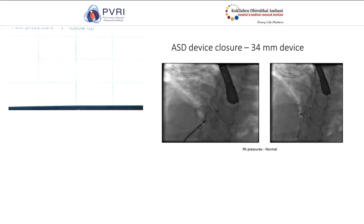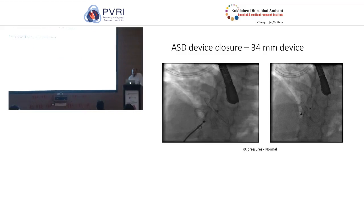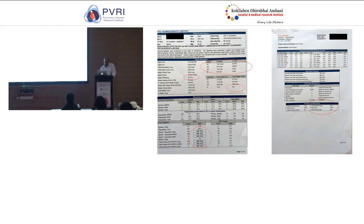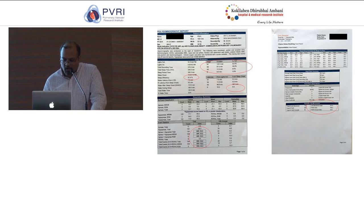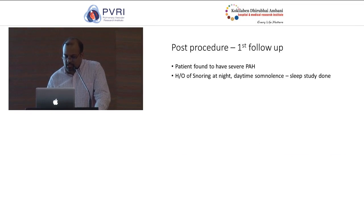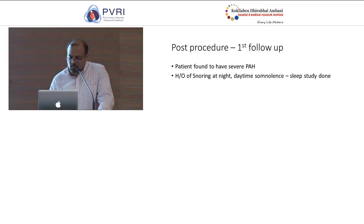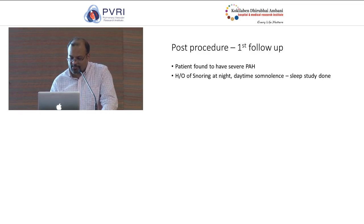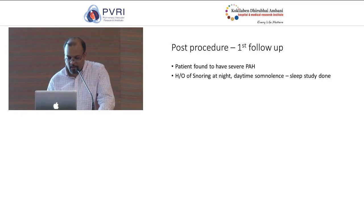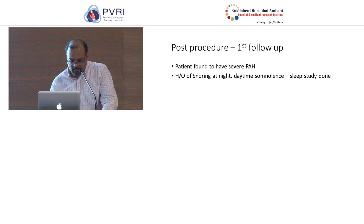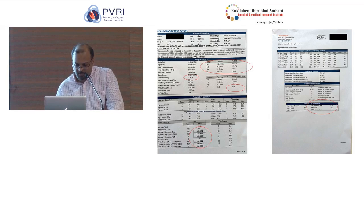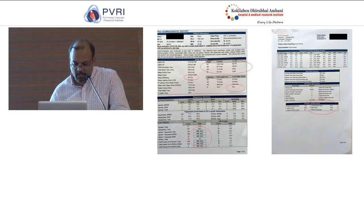After that, he came for follow-up. When he came for follow-up, we found that he was having severe pulmonary artery hypertension. We delved into the history and found that he had a history of snoring at night and some daytime somnolence. A sleep study was done, and the findings were quite interesting.